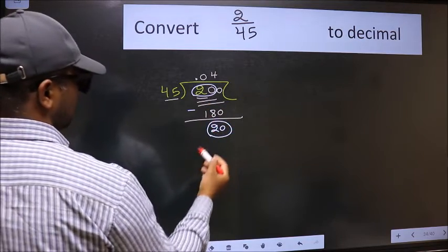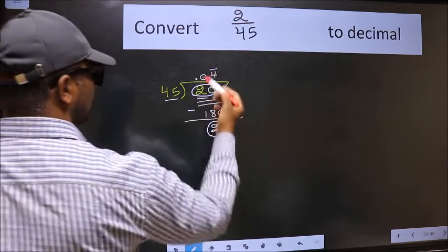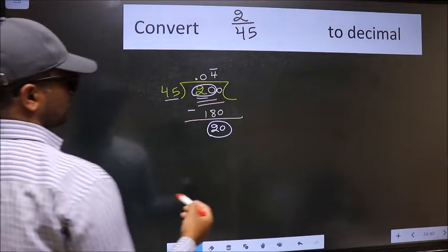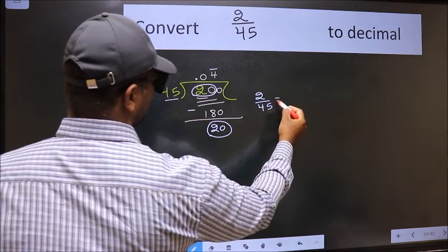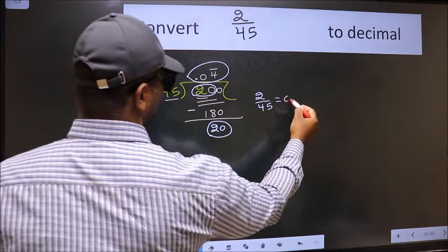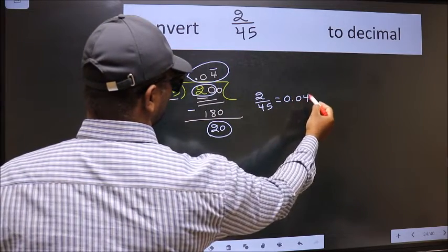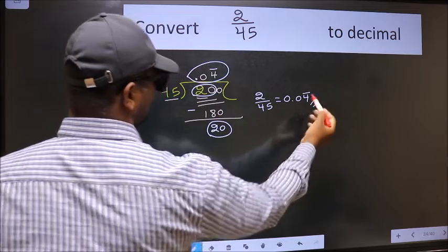That means we get bar notation on this number. Therefore, the decimal of 2/45 is 0.04 with a bar on this number. This is our answer.